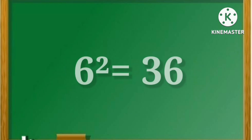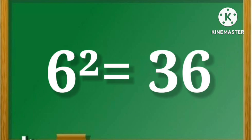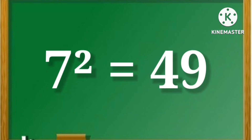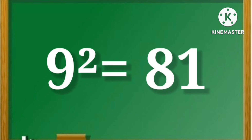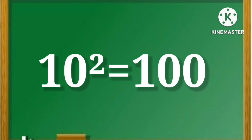6 square is equal to 36. 7 square is equal to 49. 8 square is equal to 64. 9 square is equal to 81. 10 square is equal to 100.